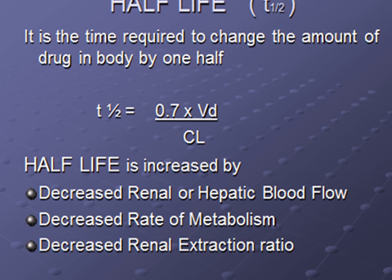What is half-life? It is the time required to change the amount of drug in the body by one half, or in simple words, the time required to reduce the amount of drug to half of its initial concentration. The formula is: half-life = 0.7 × Volume of Distribution / Clearance. So half-life is affected by volume of distribution and clearance.